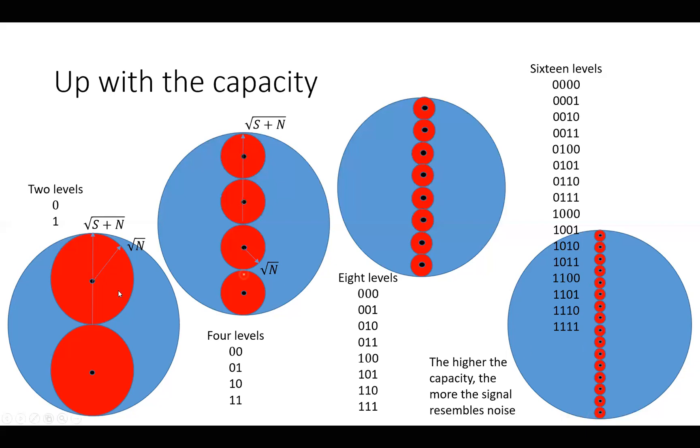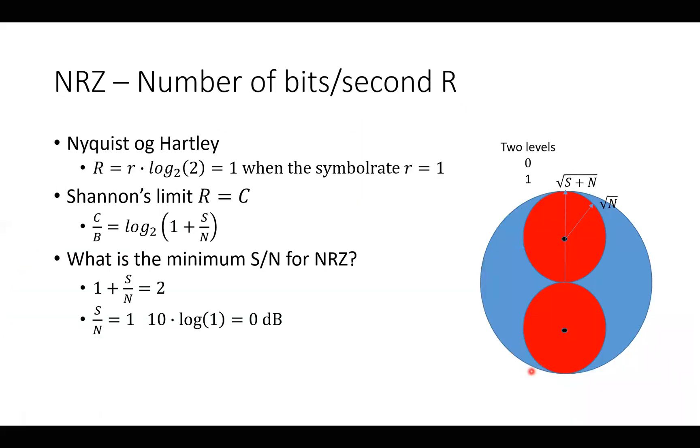Because here we can get the signal here at one instance, here at another instance, here at a third instance and so on. And for an observer that may look just like noise. But if an observer sees just two levels, they see just this one and this one. It doesn't look like noise, it looks like a signal. So the best thing we can do with a signal is to make it look like noise.